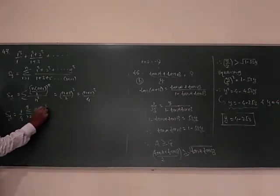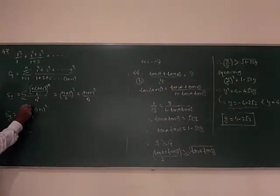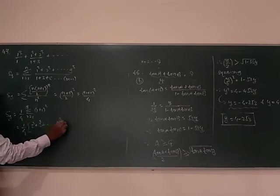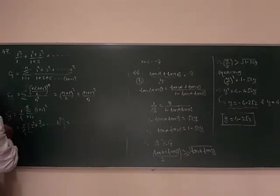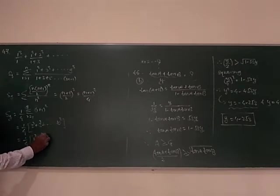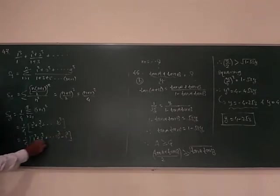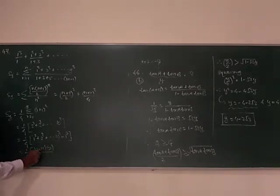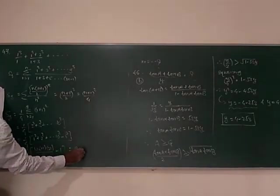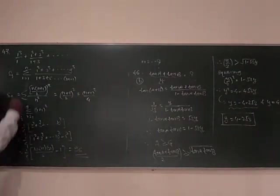So S9 equals 1 by 4 times summation of (R plus 1) squared from R equals 1 to 9. This is 2 squared plus 3 squared up to 10 squared, which equals 1 by 4 times (10 times 11 times 21 by 6 minus 1). Simplifying gives 96, which is option D.